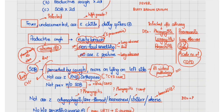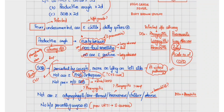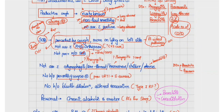Bronchitis may be present, but there are no audible wheeze on bare ear, so it is less likely though it remains a differential. Lung abscess and bronchiectasis are less likely because there is no foul-smelling discharge, no postural variation, and no history of previous shortness of breath episodes. Acute exacerbation of COPD is also less likely. So based on history, the two main differentials are bronchitis and pneumonia.